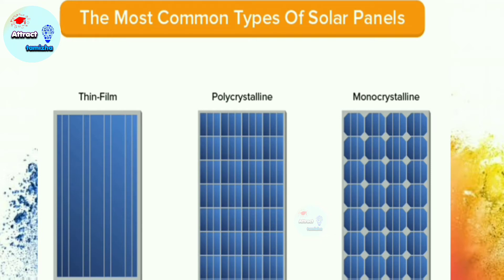Monocrystalline — you can use silicon and germanium, which are semi-conducting materials. Why mono? Mono means one. From chemistry, that's why one single cell is arranged in this panel.